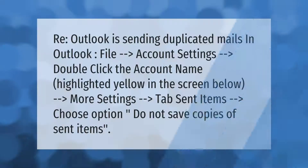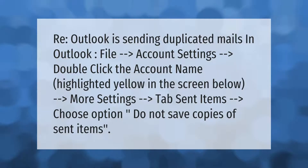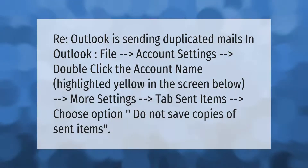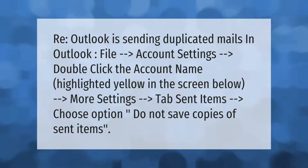If Outlook is sending duplicated mails, go to File > Account Settings and double-click the account name. Then go to More Settings, select the Sent Items tab, and choose the option 'Do not save copies of sent items.'